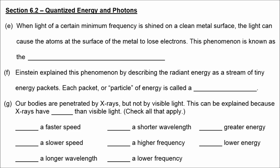When light of a certain minimum frequency is shined on a clean metal surface, it can cause the atoms at the surface of the metal to lose electrons. This phenomenon is known as the photoelectric effect. Albert Einstein explained this by describing radiant energy as a stream of energy packets — each packet or particle of energy is called a photon. Our bodies are penetrated by x-rays, but not by visible light, because x-rays have a shorter wavelength, a higher frequency, and greater energy than visible light.